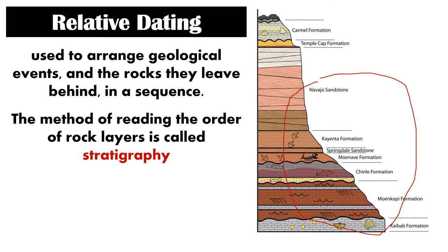With relative dating, we are comparing and analyzing rocks and other samples to get a glimpse of the age of a rock. We look at a rock's relationship with other rocks, and with this, we can identify which rock is old and which rock is young. We may not know the exact age of the rock, but we can sequence them using stratigraphy.